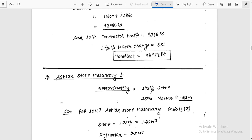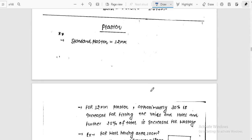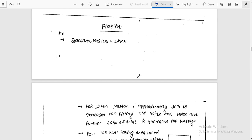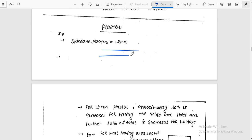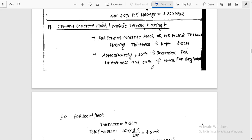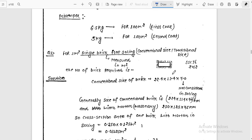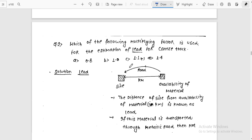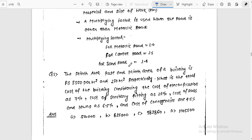Then plastering. Standard size of plastering is 12 mm thickness. Then cement concrete floor, mosaic, terrazzo floor. The floor thickness is 2.5 cm, and 10% increase for unevenness, 50% increase for dry volume. Distemper is not that important, no questions usually.